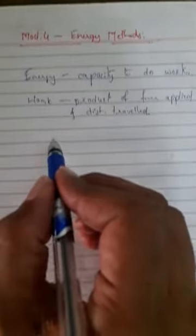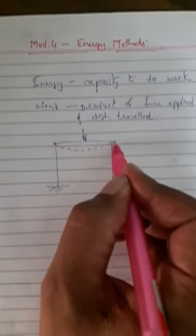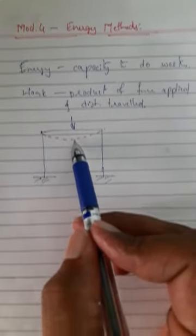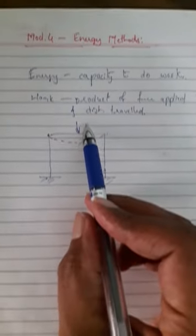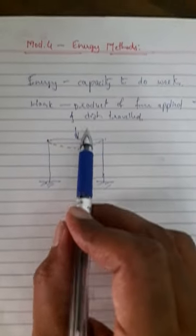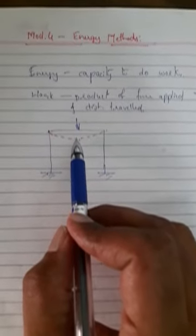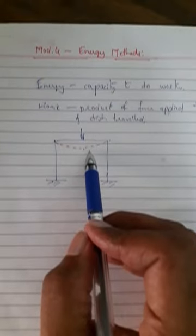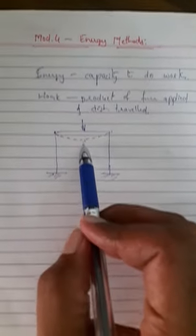In a structural system, external work done by the load is stored in the form of internal work, and that is called strain energy. Suppose I have a frame system with some load on it. When I apply the loads, it bends. This is the external load and this is the strain produced. When you remove the external load, it comes back to its original position. Hence the external work is stored in the form of strain energy. When an external load acts on a system, the structure undergoes deformation, meaning change in shape, and work is done by the external load.